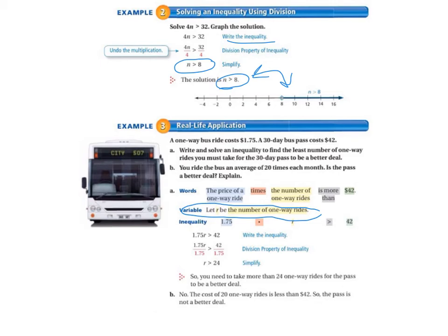$1.75 times R is greater than 42. So we use our division property of inequality, so that means we divide both sides by $1.75 to get R by itself, and 42 divided by $1.75 is 24. So we simplify, and that's what we get.